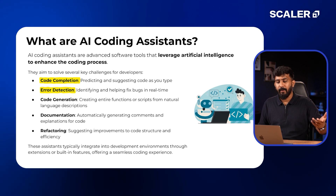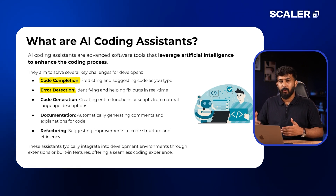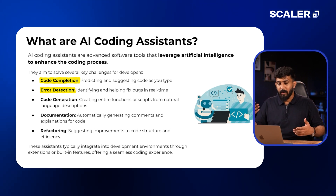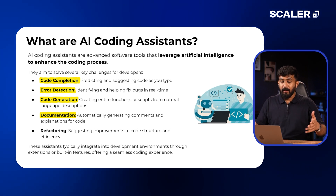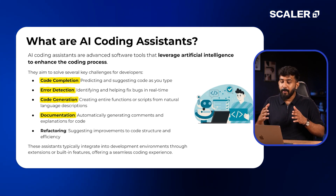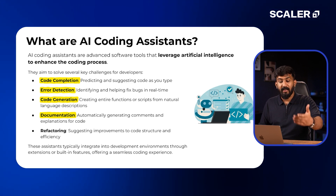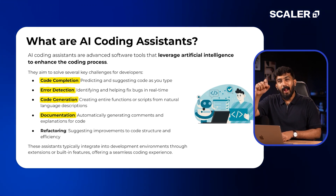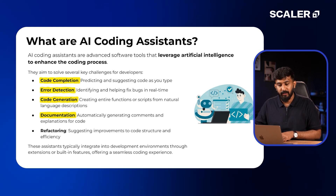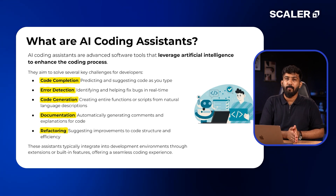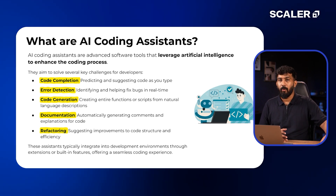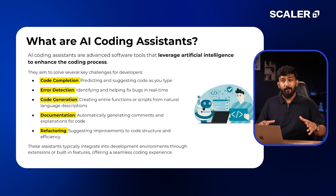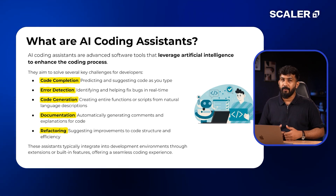Error detection — you can identify and fix bugs in real time. You can ask the AI to check or screen your code and review it, and accordingly fix the bugs. Documentation is where it gets easier, because a lot of people don't document their code. Now you can simply ask the AI to add comments in every single block of code, in every single function, explaining what exactly that function does. And finally, refactoring — if you already have a code base and want to refactor a particular block, you can use AI assistance, which suggests improvements to code structure and efficiency.